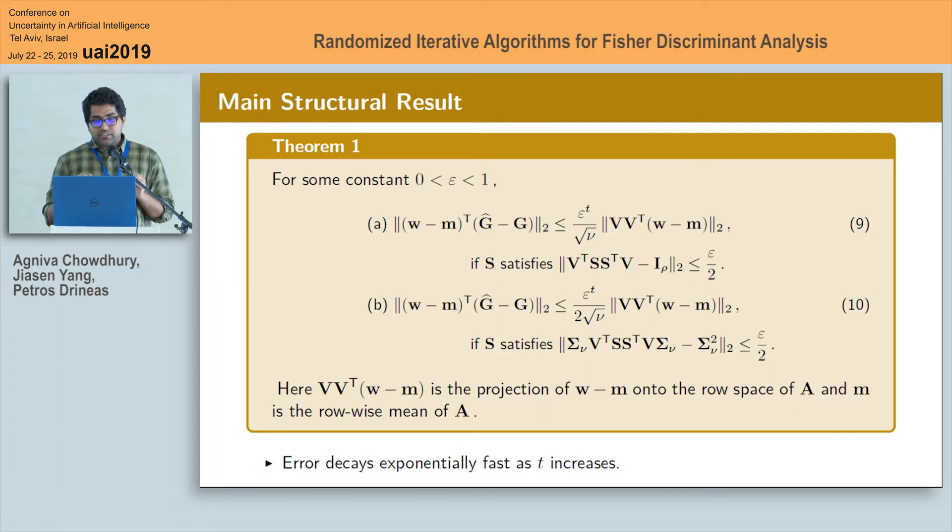Similarly, part B shows that if the sketching matrix S satisfies another structural constraint which is different from the one in part A, then also the distance between the approximate projection and the optimal projection is bounded by a quantity which is very similar to that of part A.